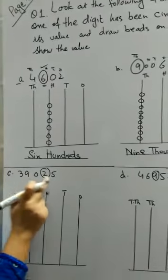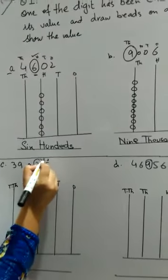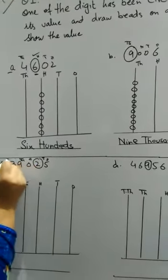Example C: 39,025. This number has ten thousands, thousands, hundreds, tens, and ones places.